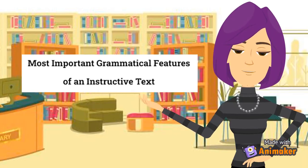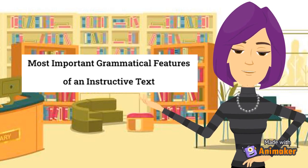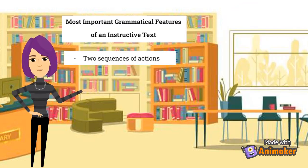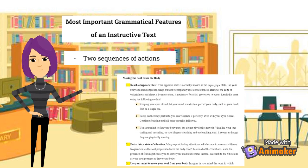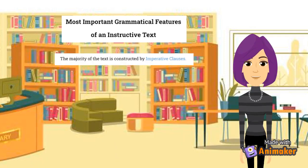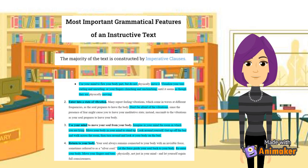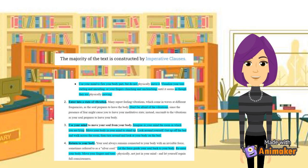Now we are going to present the most relevant grammatical features of this instructive text. We can find two sequences of actions — in the first part of the instructions and also in the second part. These sequences are enumerated with numbers from one to four. Also, we can identify that the majority of the text is constructed by imperative clauses, which give direct commands. As we can see, examples can be found throughout the whole text.